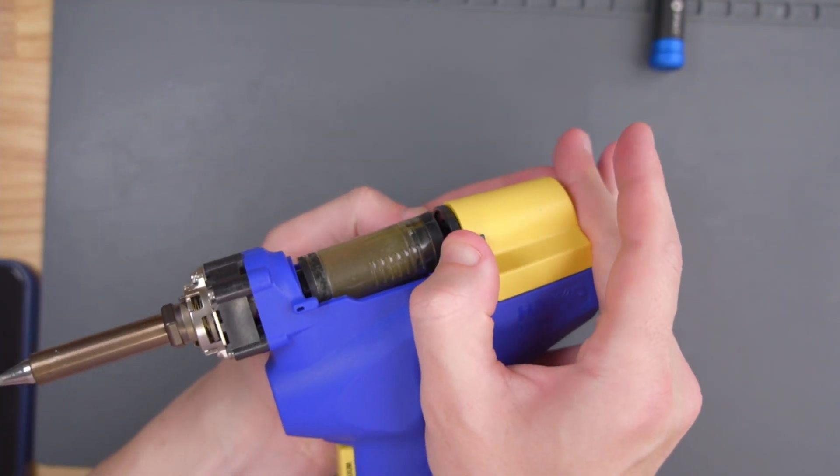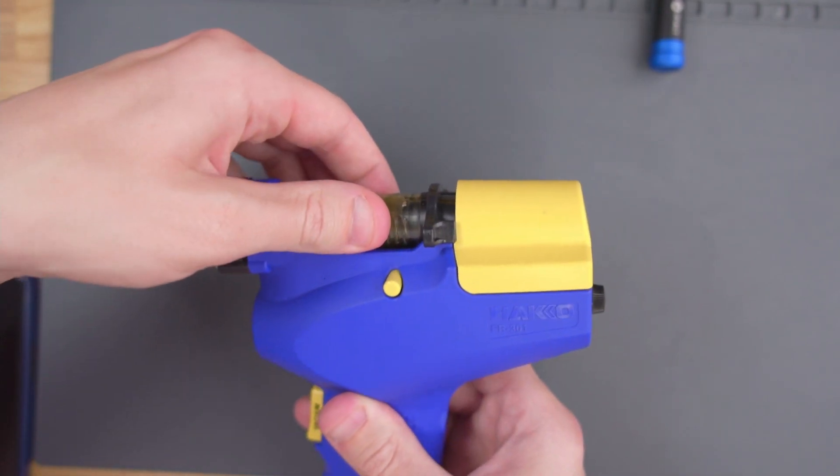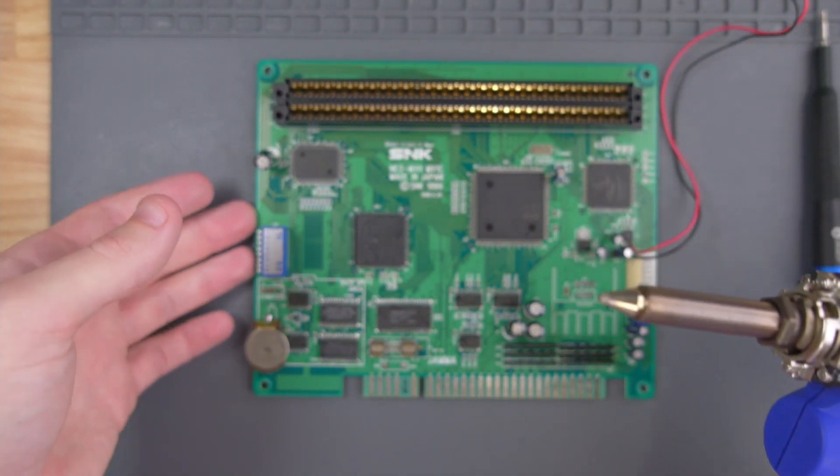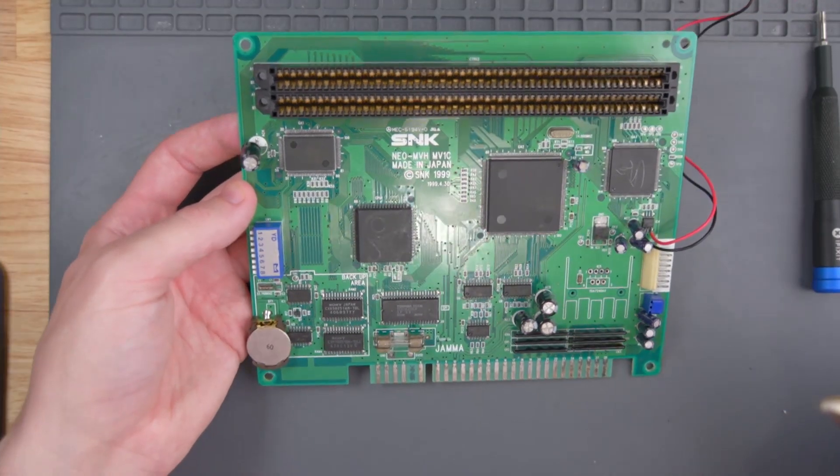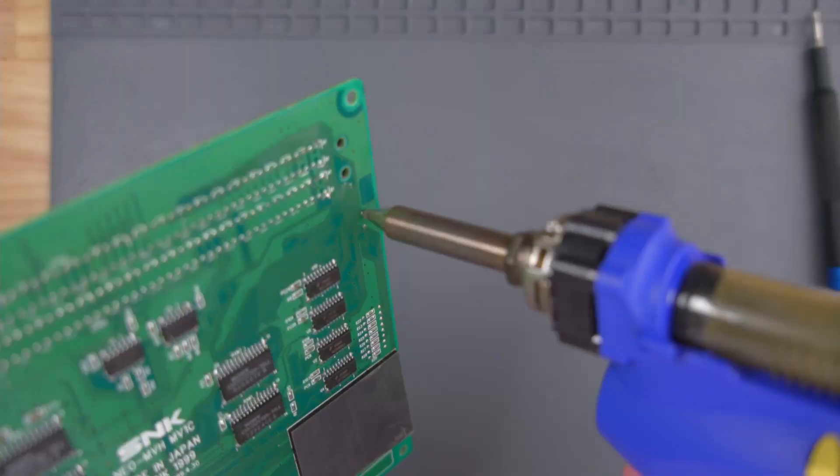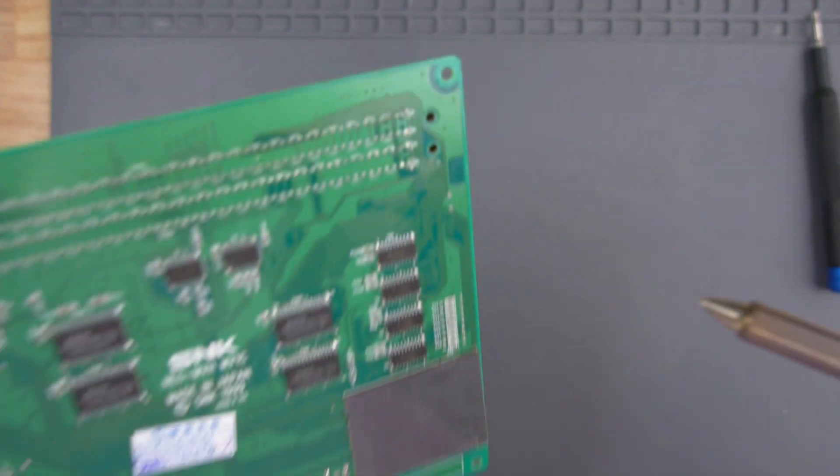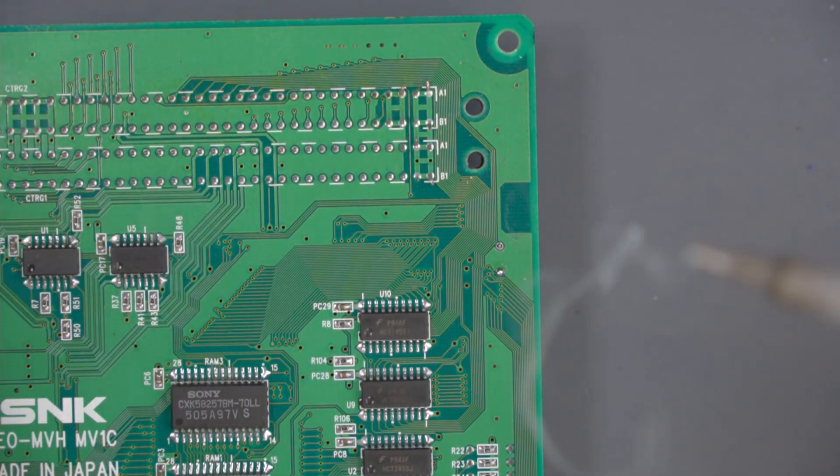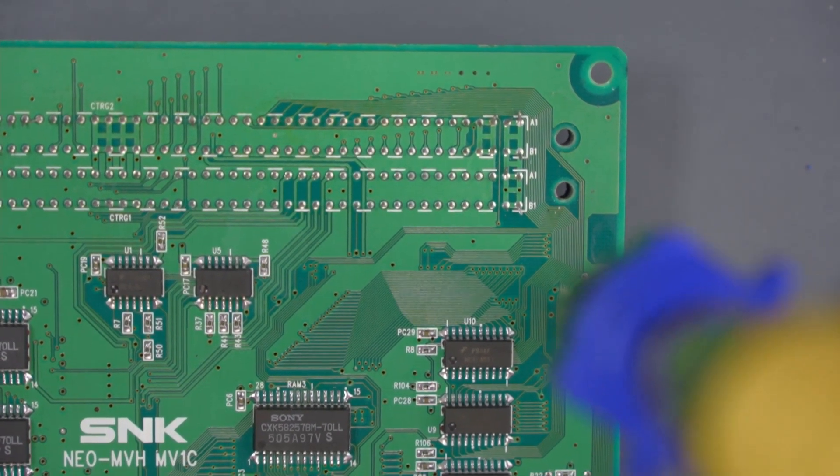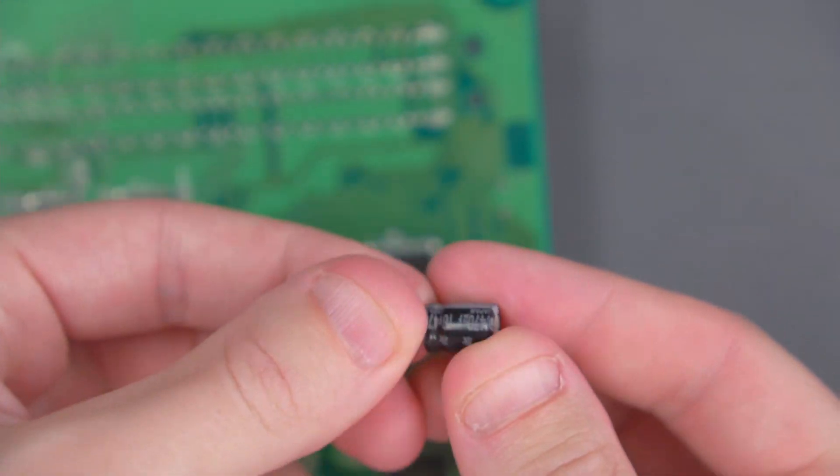Let's test one more time to see if this thing works. Seems pretty good. Now that we've got it all back together, I turned it on and let's test it out on this Neo Geo MV1C arcade board. I've got to replace all these capacitors here, so let's try to remove this one. That was pretty easy.